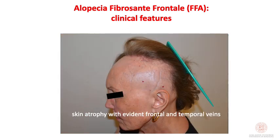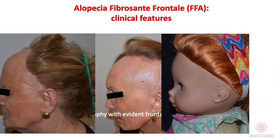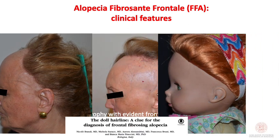Another possibility in severe forms is skin atrophy with evident frontal and temporal veins, giving an aspect that resembles the typical hairline of a doll — very characteristic of FFA.